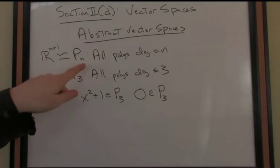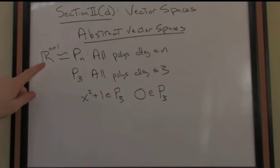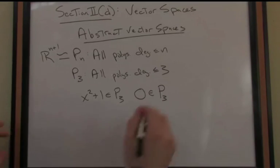Well, if you counted up all the slots I could fill as a vector, then I have n plus 1 total slots to fill. That's no different structurally than the Euclidean space with n plus 1 dimensions. So let's see that more directly.